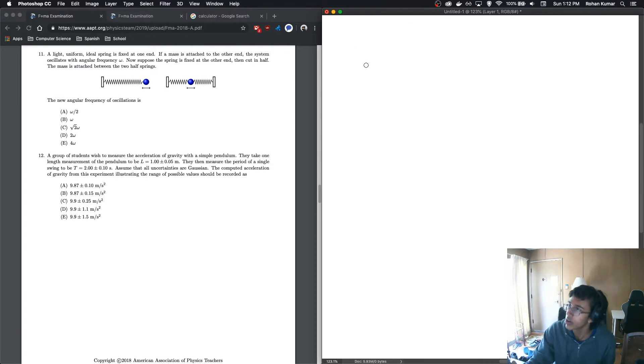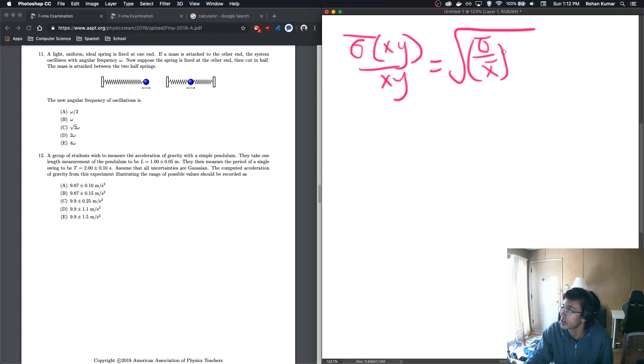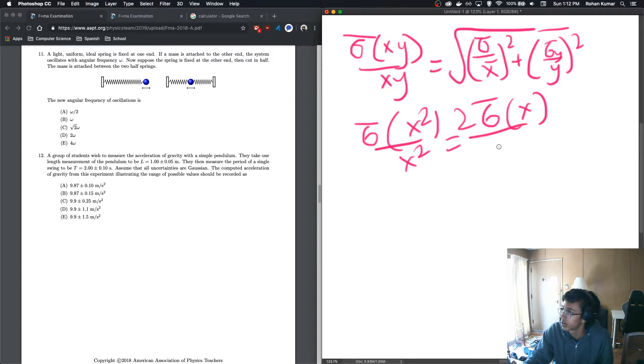So uncertainty of xy over xy is equal to the root of the uncertainty of x over the average value of x squared plus the uncertainty of y over the average of y squared. So this is one of the most important ones. There's also the squared one, which basically says that the uncertainty of x squared over x squared is equal to the uncertainty of x times 2 over x.